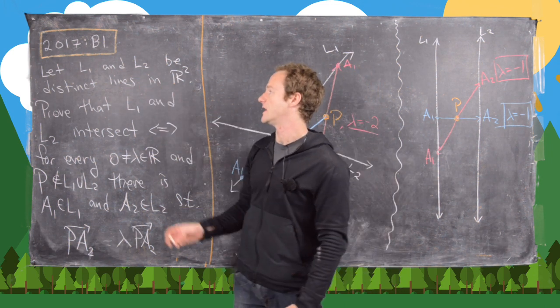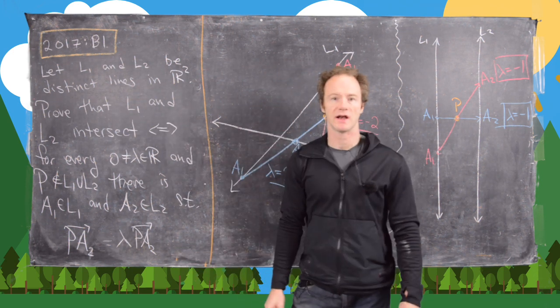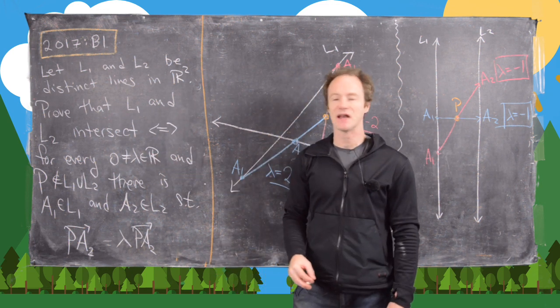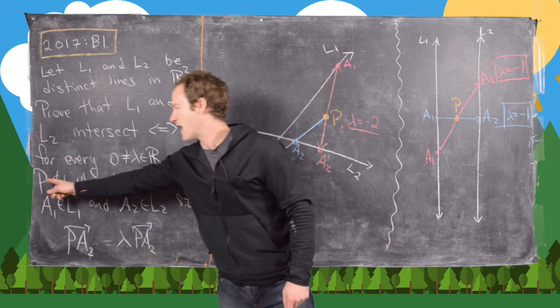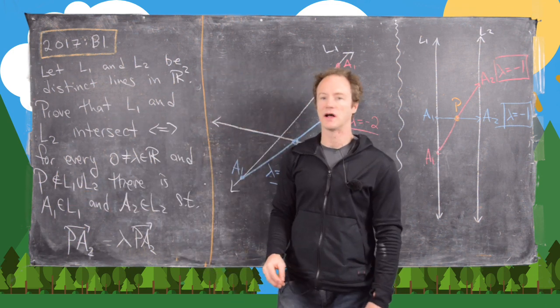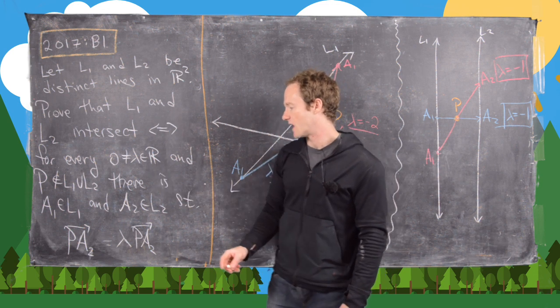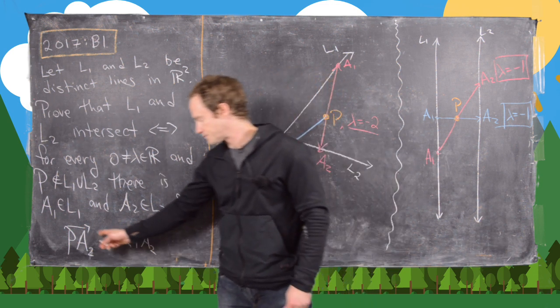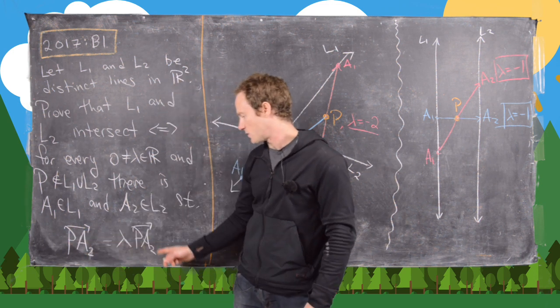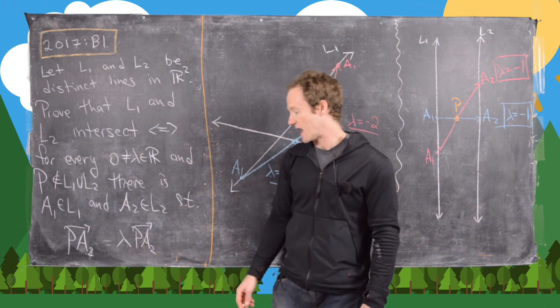Let's let L1 and L2 be distinct lines in the plane. We want to prove that L1 and L2 intersect if and only if for every lambda which is not equal to zero and every point P which is not on L1 or L2, there exists A1 and A2 each on L1 and L2 such that the vector from P to A2 is a scalar multiple with the scalar lambda from P to A1.